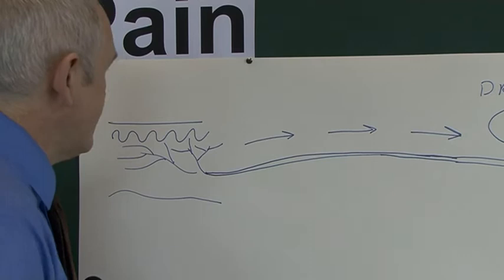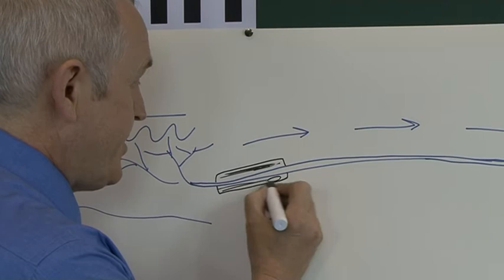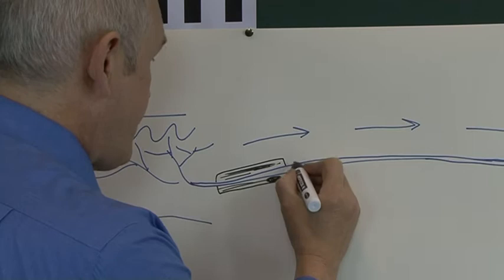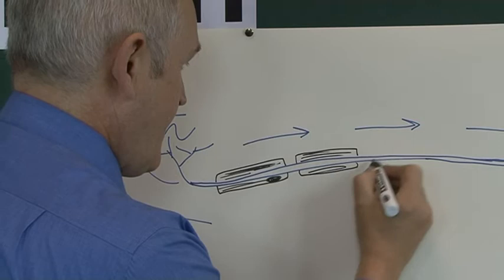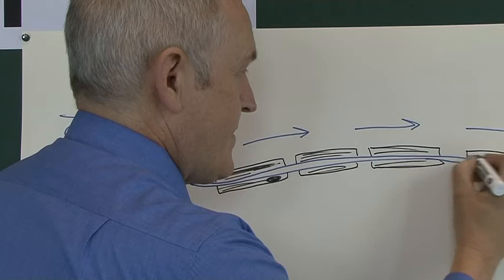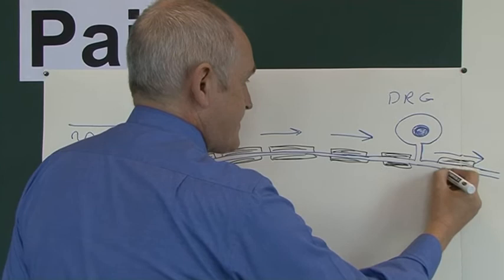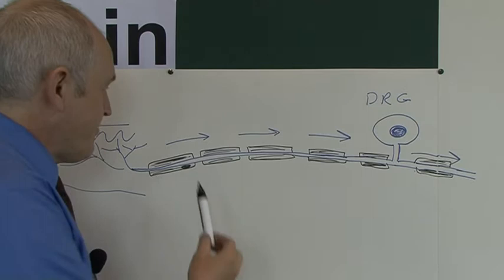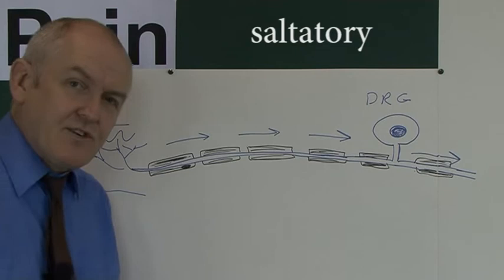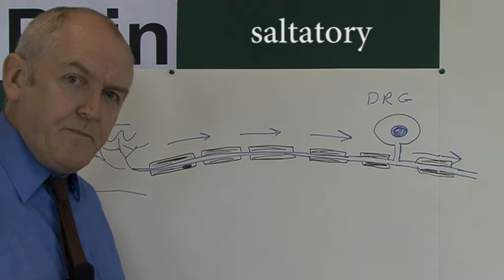Individual Schwann cells surround lengths of the nerve fibre, wrapping around it. Each Schwann cell has a nucleus and they collectively compose the myelin sheath, which insulates, protects, and nourishes the nerve fibres. The presence of the myelin sheath also facilitates saltatory transmission of the nerve impulse, which is very rapid. In these particular nerve fibres, called A-delta fibres, the speed of transmission is typically 6 to 30 metres per second.